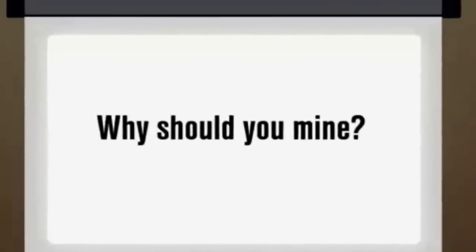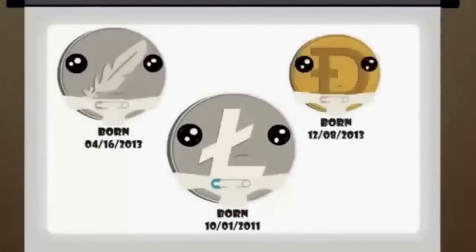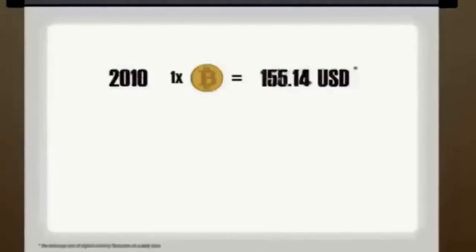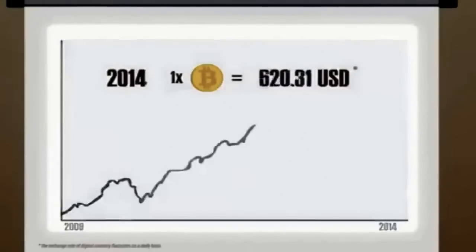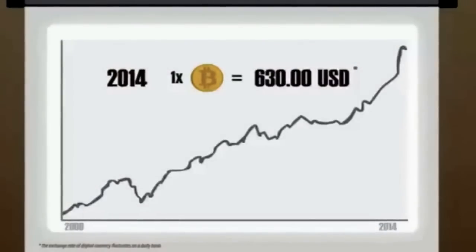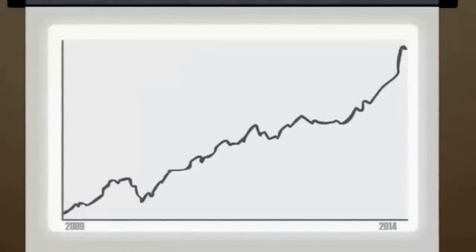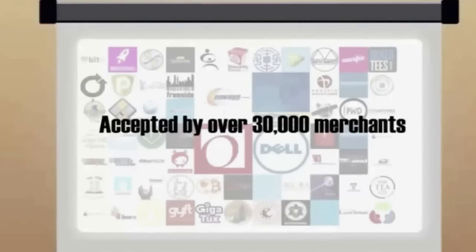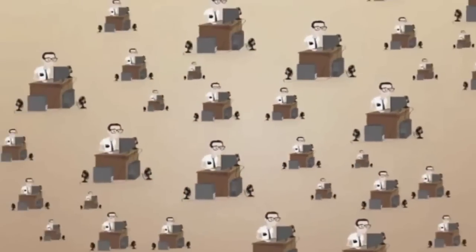Why should you mine? Digital currencies are still in their infancy. Bitcoin, the first digital currency, was issued in 2009. Since that time, the value of bitcoin has risen dramatically. As the difficulty of mining new bitcoins increases, the value of the coins has also increased. Thousands of merchants including Dell, Overstock.com, Tiger Direct, Newegg, and many more now accept bitcoin as a direct method of payment. As more places accept digital currency, the value of that currency tends to increase.